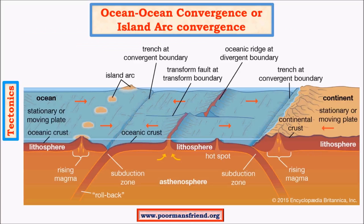Moving on to ocean-ocean convergence, also called island-arc convergence. The questions you can expect from this topic include the formation of the Japanese islands, the Indonesian archipelago, and the Caribbean islands, which are all formed by similar processes. There may be a combined question or individual questions on each island group. The core concepts will be the same regardless of how the question is framed — only the nature or form of the question will slightly vary.